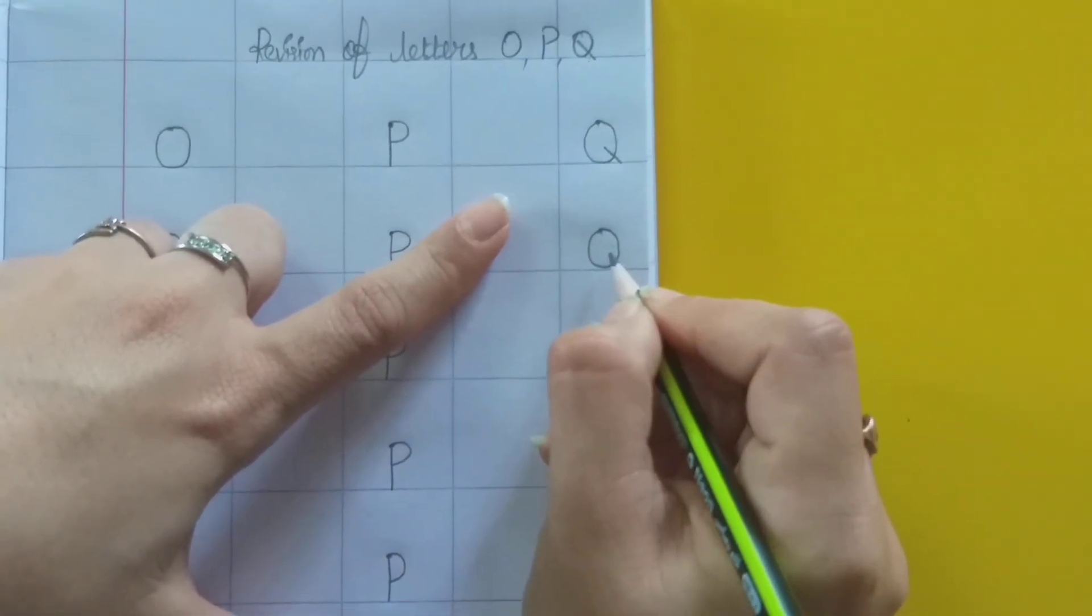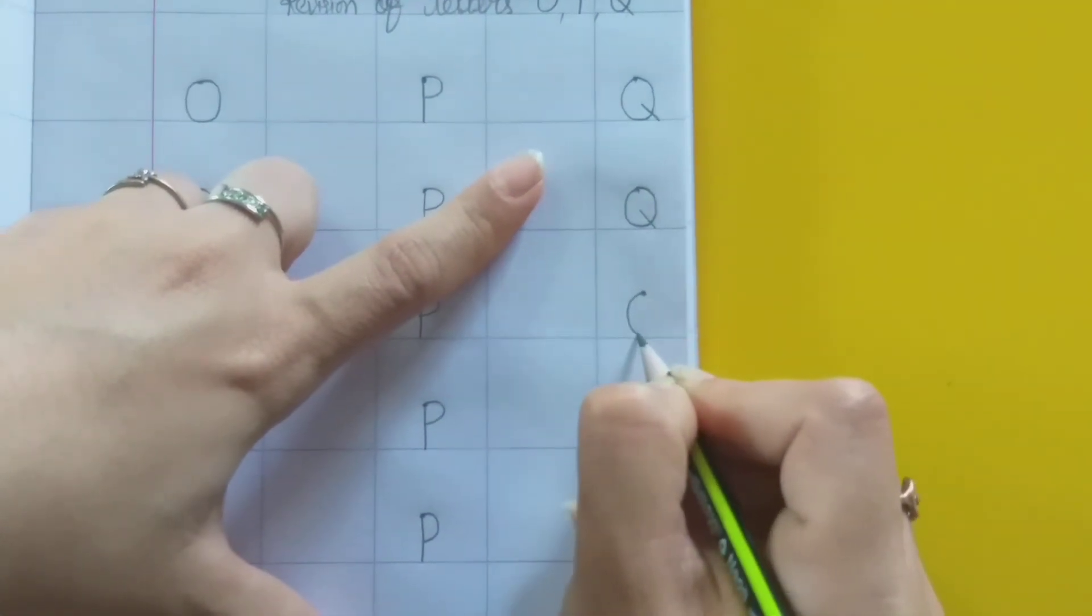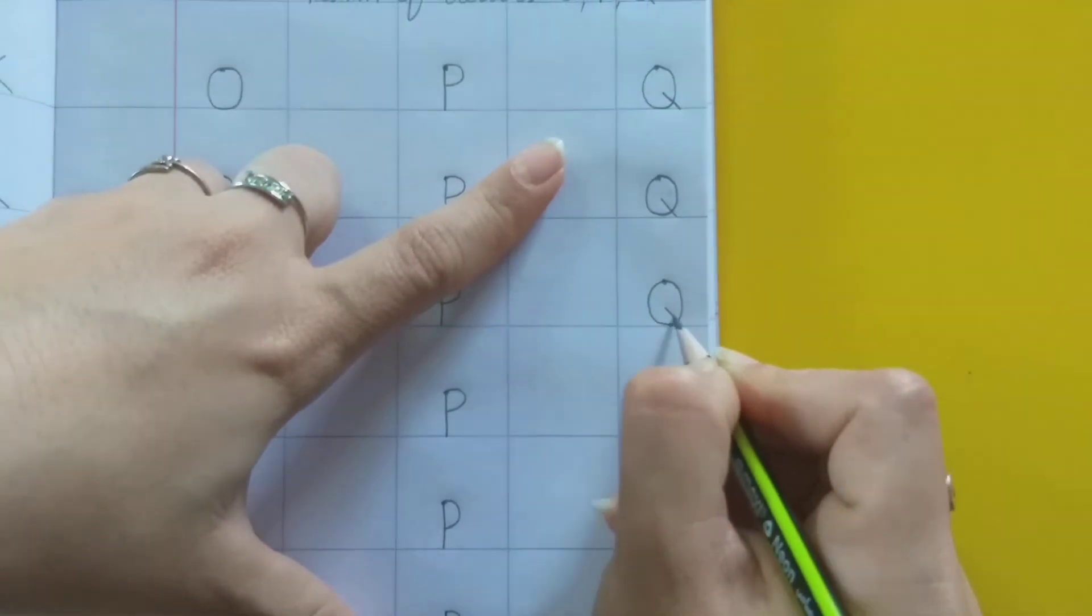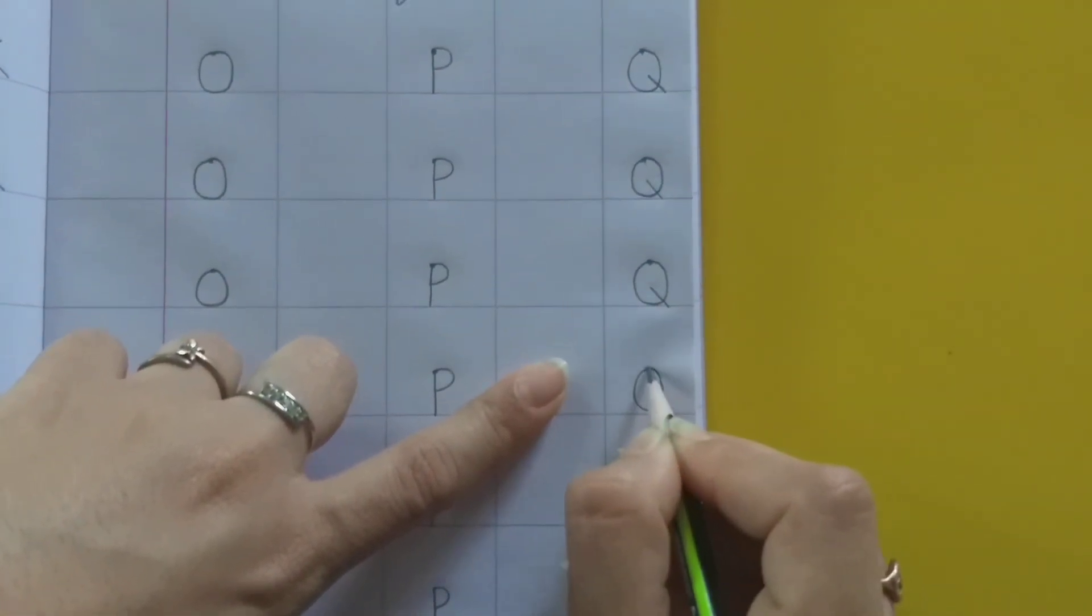Q for queen. First make a circle, then ek slanting line. Q.